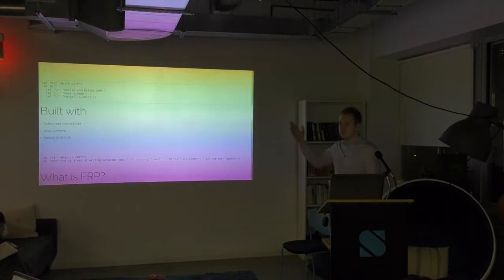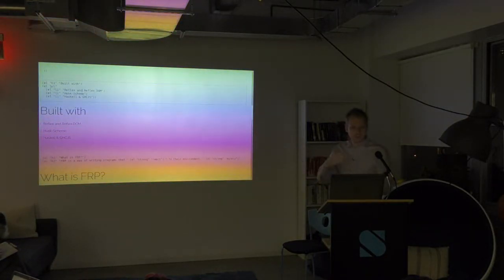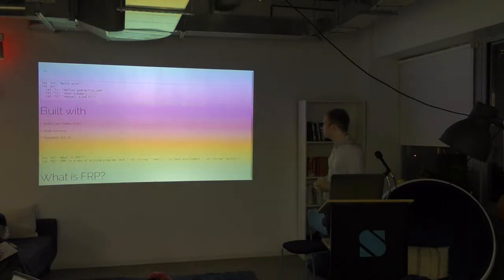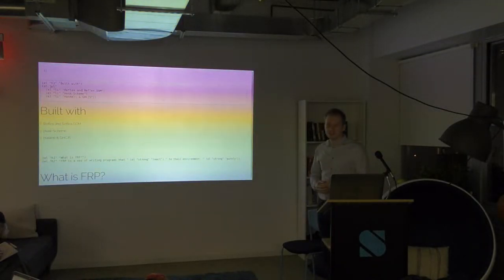Reflex-DOM is a library that provides an FRP-based DOM manipulation library. You can actually see it in action here — this is the DOM that I've built, and up here is the code that builds that DOM. This code with the element building and all that kind of stuff is similar to what you'd see in Haskell.